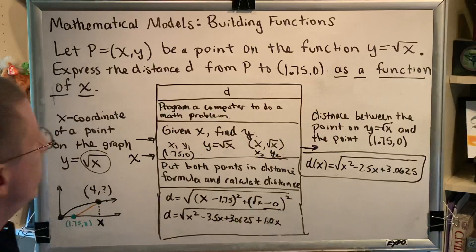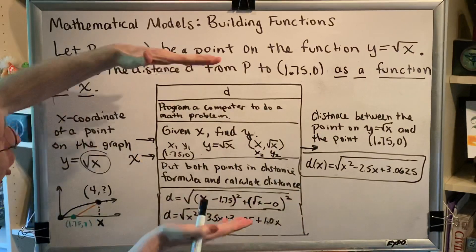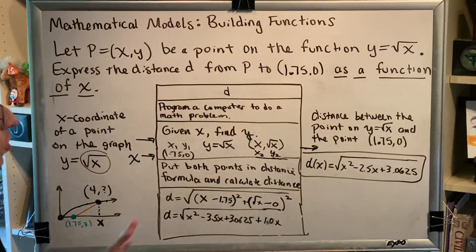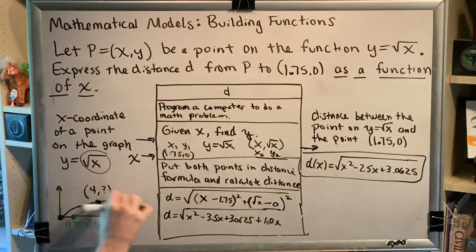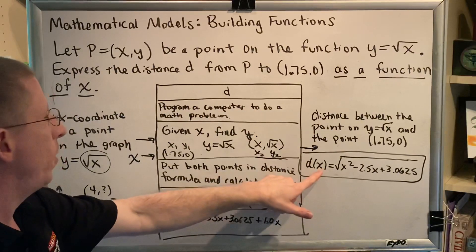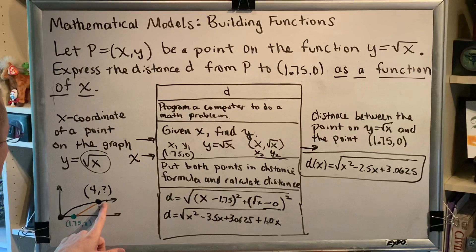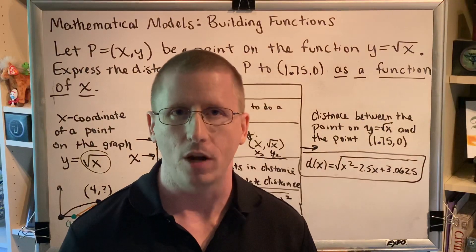So what comes out is d(x) equals the square root of x² minus 2.5x plus 3.0625. This is the equation you put into the computer so it can compute the distance from any point on the square root function to the point (1.75, 0), where the only input needed is x — the x coordinate of that point. That's the concept of the problem solved in the previous video. Now you've seen both the skill and the concept.